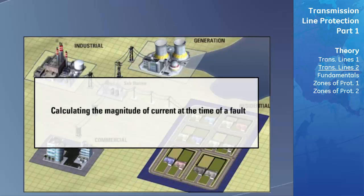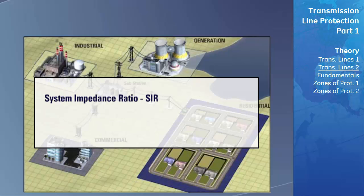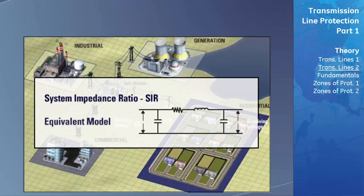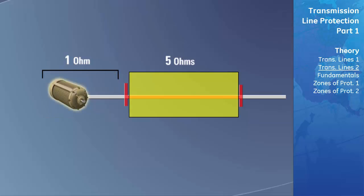Calculating the magnitude of current that will flow through the transmission line at the time of the fault and configuring accurate settings for distance relays is a very important task that the protection engineer must perform. In order to do this, the protection engineer must first calculate the system impedance ratio and develop an equivalent electrical model of the transmission line. The system impedance ratio is a factor that needs to be considered when determining how to protect the transmission line and can greatly affect what will happen to a power system at the time of a fault. The system impedance ratio takes the source impedance of the system behind the transmission line and divides that by the line impedance that is being protected.